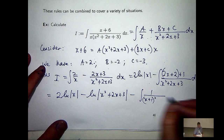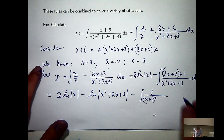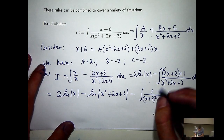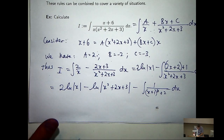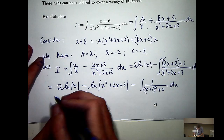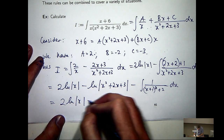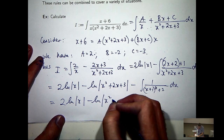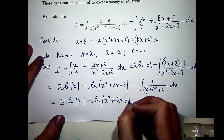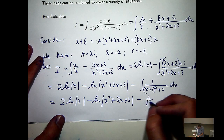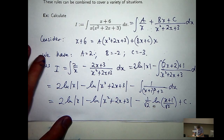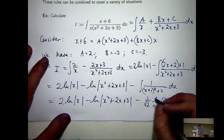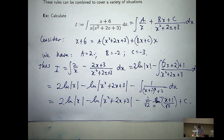Completing the square on the bottom gives x plus 1 all squared plus 2. So all I need to do now is evaluate the final integral, which gives an inverse tangent.